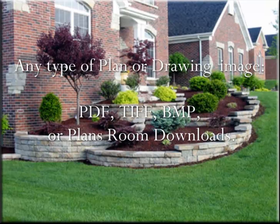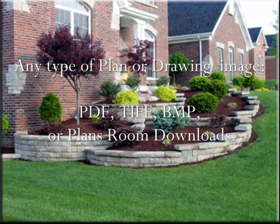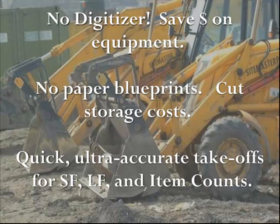Quick Measure On Screen will help you take off any blueprint image in any digital file format — a PDF, a TIFF, bitmap — in whatever format the original blueprint was scanned. There is no digitizer equipment involved and no paper blueprints. You're simply using the mouse on your PC to click around the blueprint image on the screen to do your takeoffs for square footage, linear footage, and item counts.